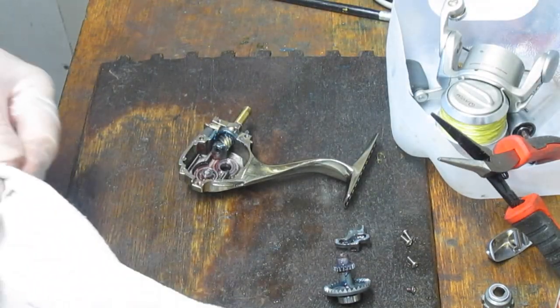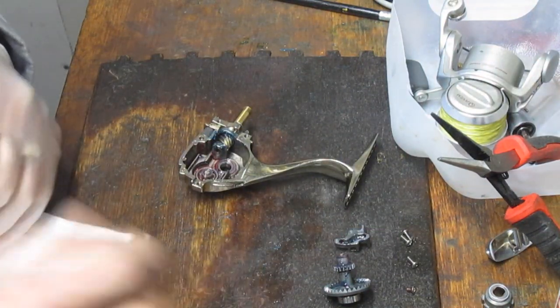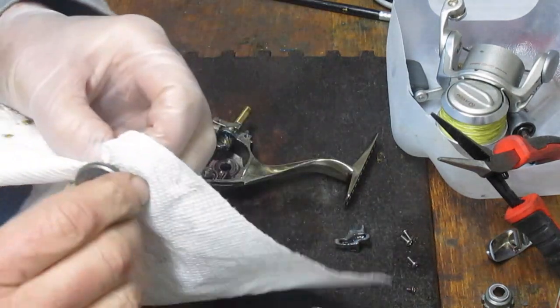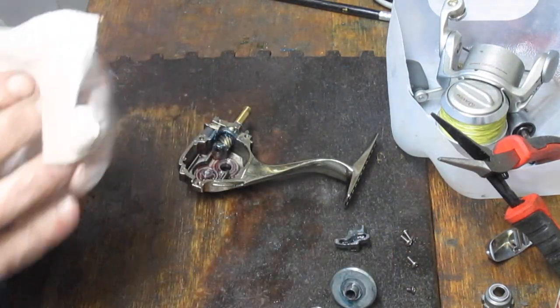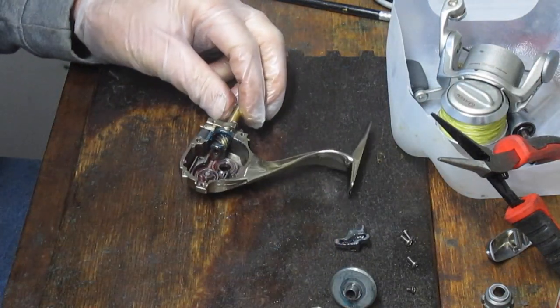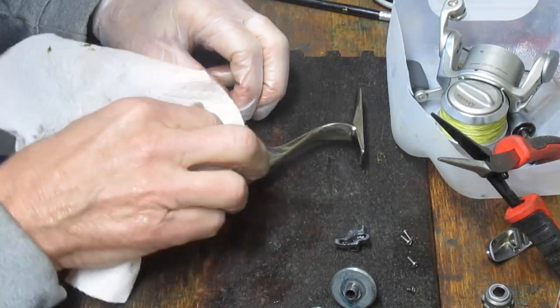So this reel seems to be very clean. A little bit of overflow of some grease, but short of that, we'll just do some quick house cleaning here. There's nothing that's really coagulated on it. It does look like the reel's been kept serviced. So we don't need to do too much.